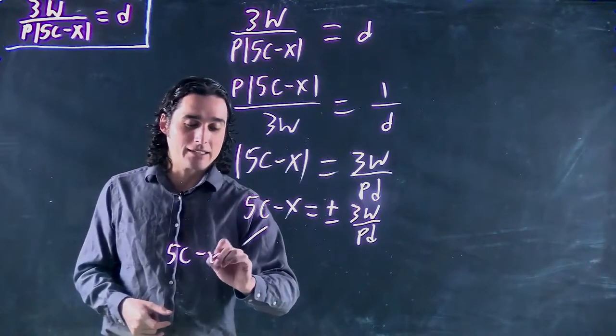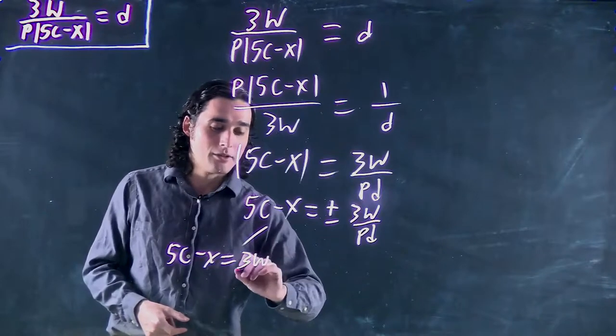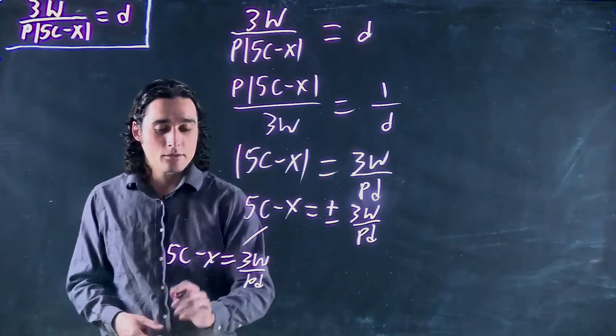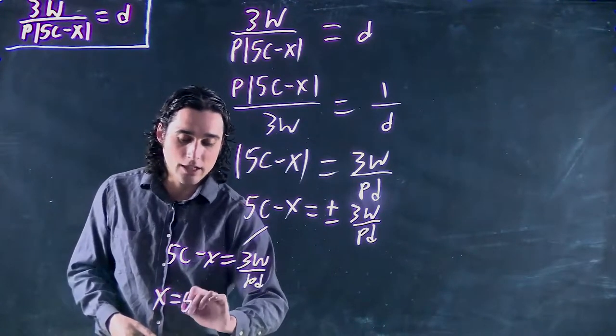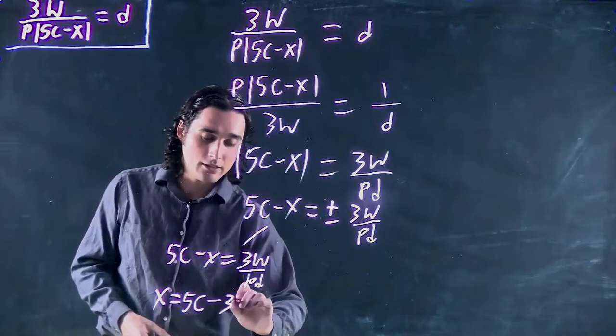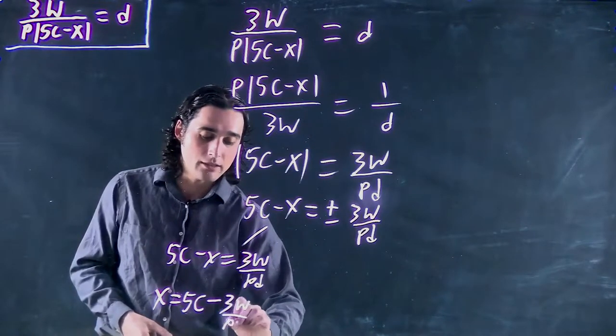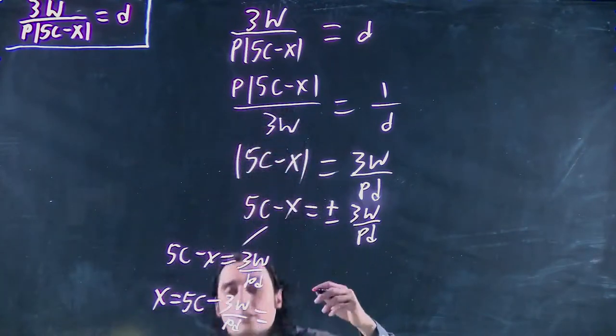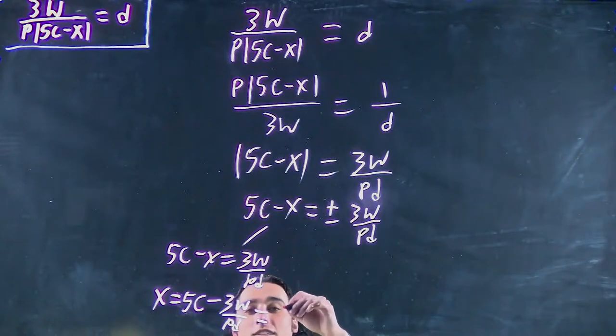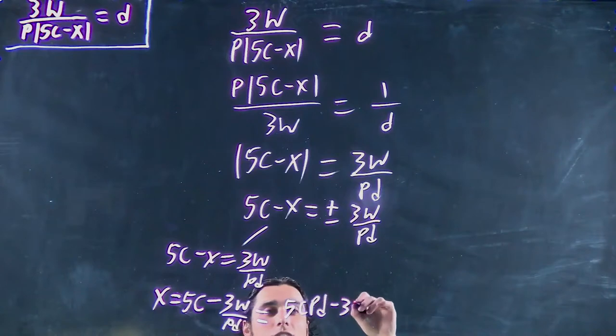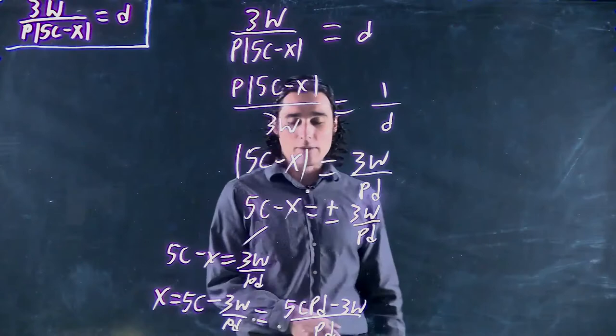So 5c minus x equals 3w over pd. And now we can say x equals 5c minus 3w over pd. And if we wanted to, we could make this one fraction. So we can say this is the same as 5cpd minus 3w over pd. If we want to clean it up a bit. But that would be up to us.